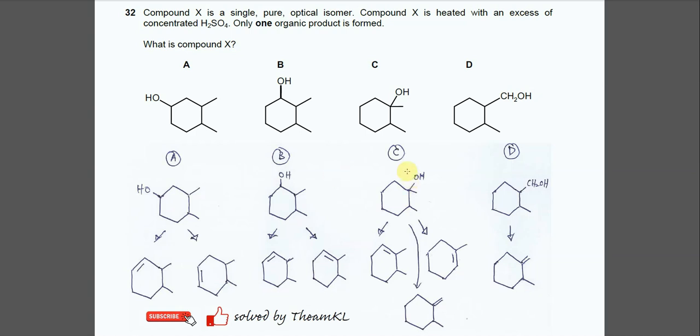Question 32. Compound X is a single pure optical isomer and the compound X is heated with excess concentrated H2SO4. Only one organic product is formed.